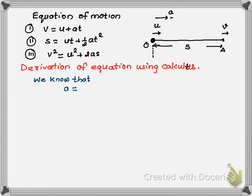If you write it in differentiation format, A is equal to dv by dt — we already knew this when we studied acceleration. From here we can write dv is equal to A into dt, and acceleration is constant, it will not change. Now if you integrate the left side, you have to integrate the right side also.